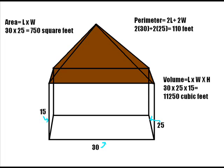For the area, we need to just find the length and the width and plug that into our formula. The length is 30 and the width is 25. So area equals length times width. 30 feet times 25 feet equals 750 square feet.